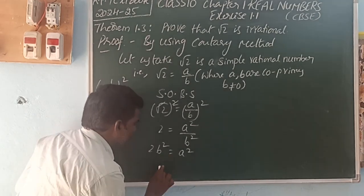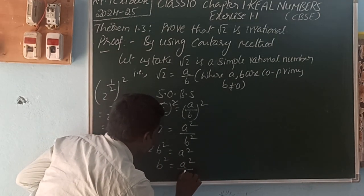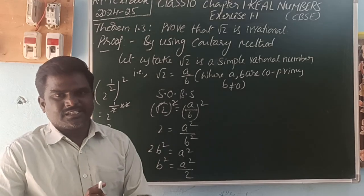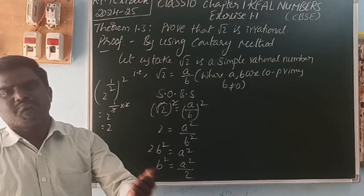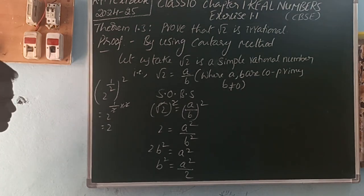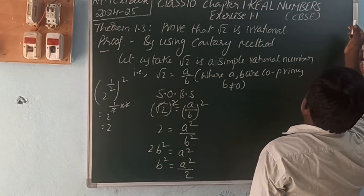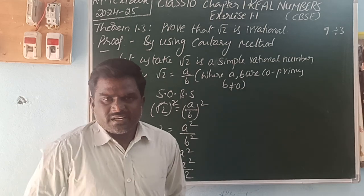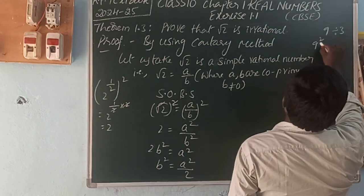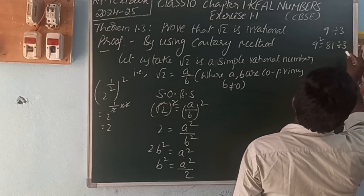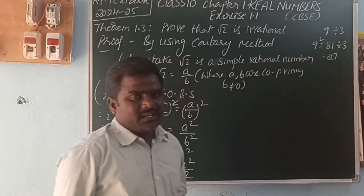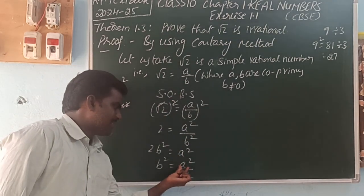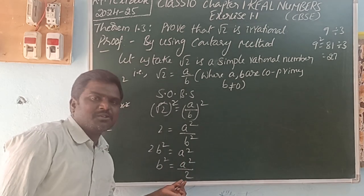So, 2 is a prime number. Any number divided by a prime number — then its square is also divided by that prime number. For example, 9 is divisible by 3, giving 3. And 9 squared is 81, which is also divisible by 3, giving 27. So, if any number is divisible by a prime number, then its square is also divisible by that prime number.